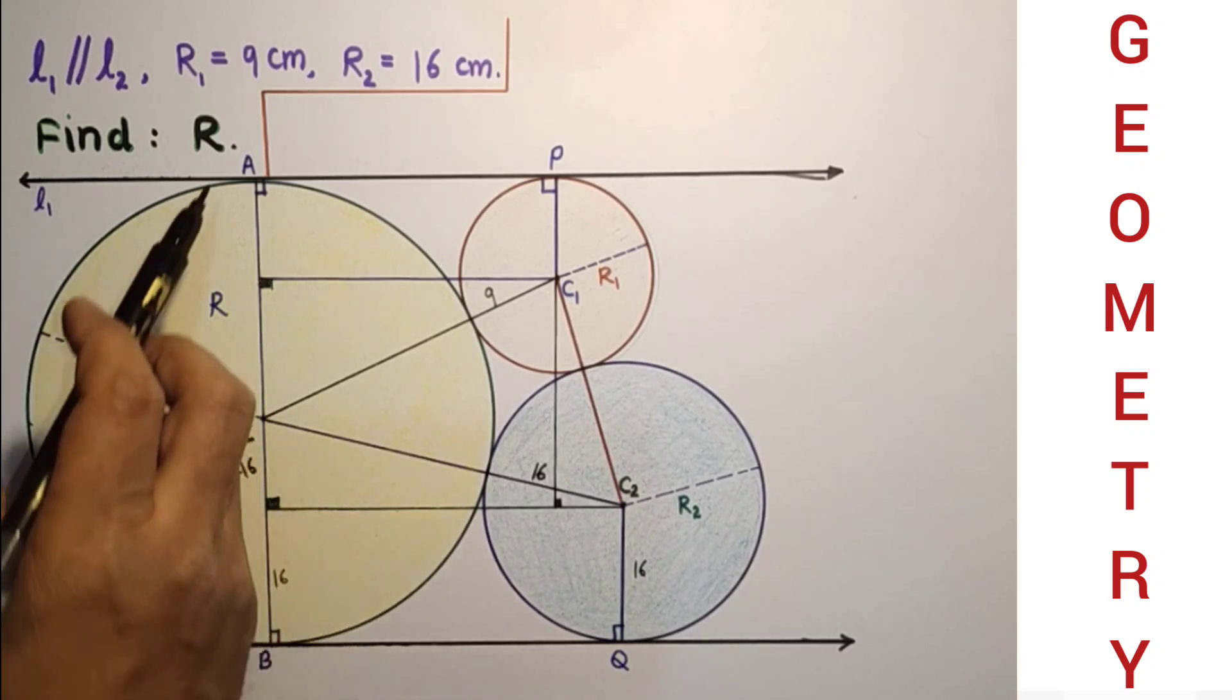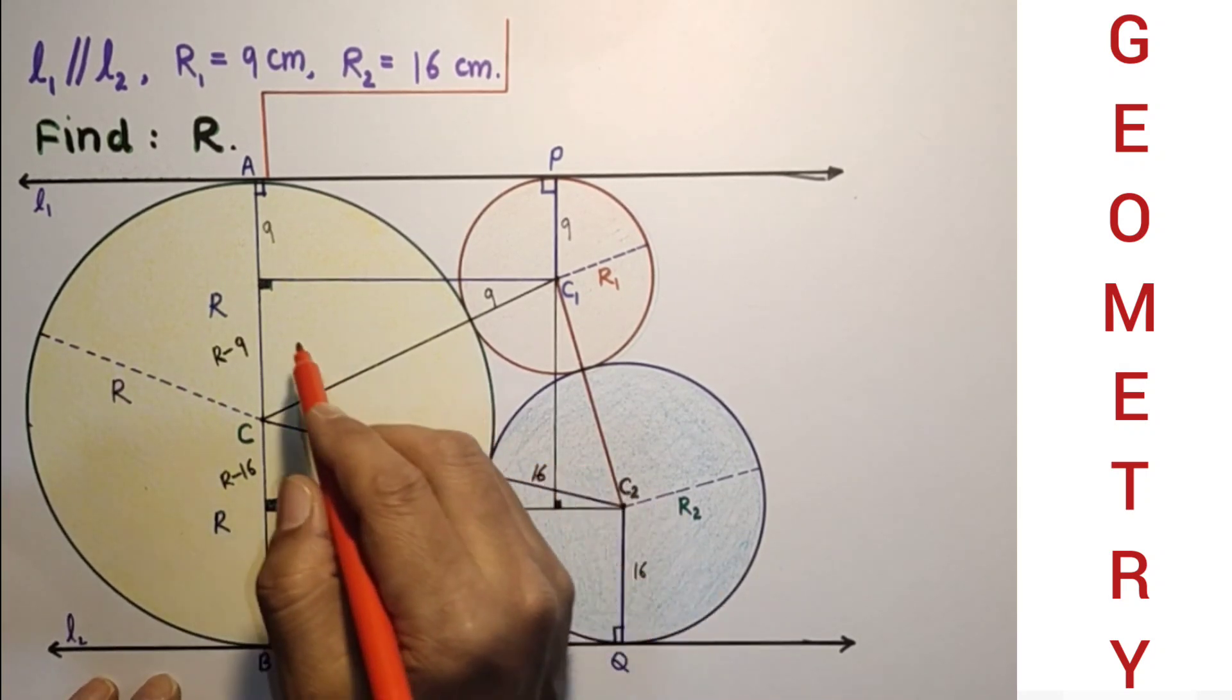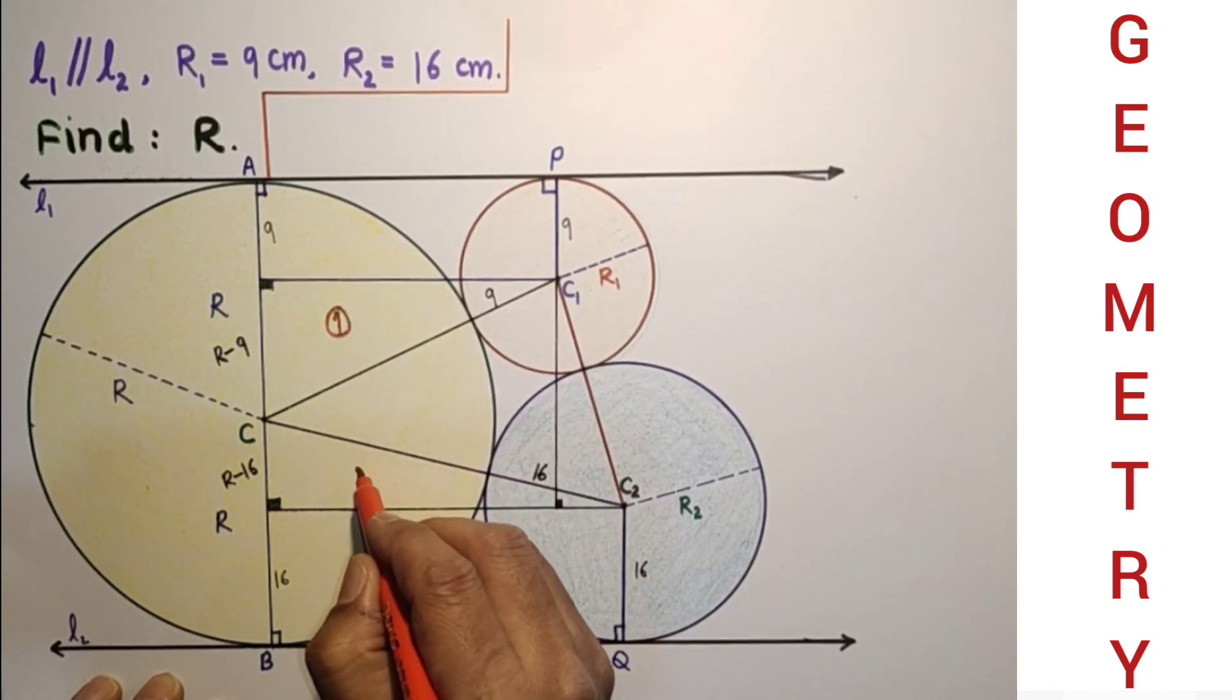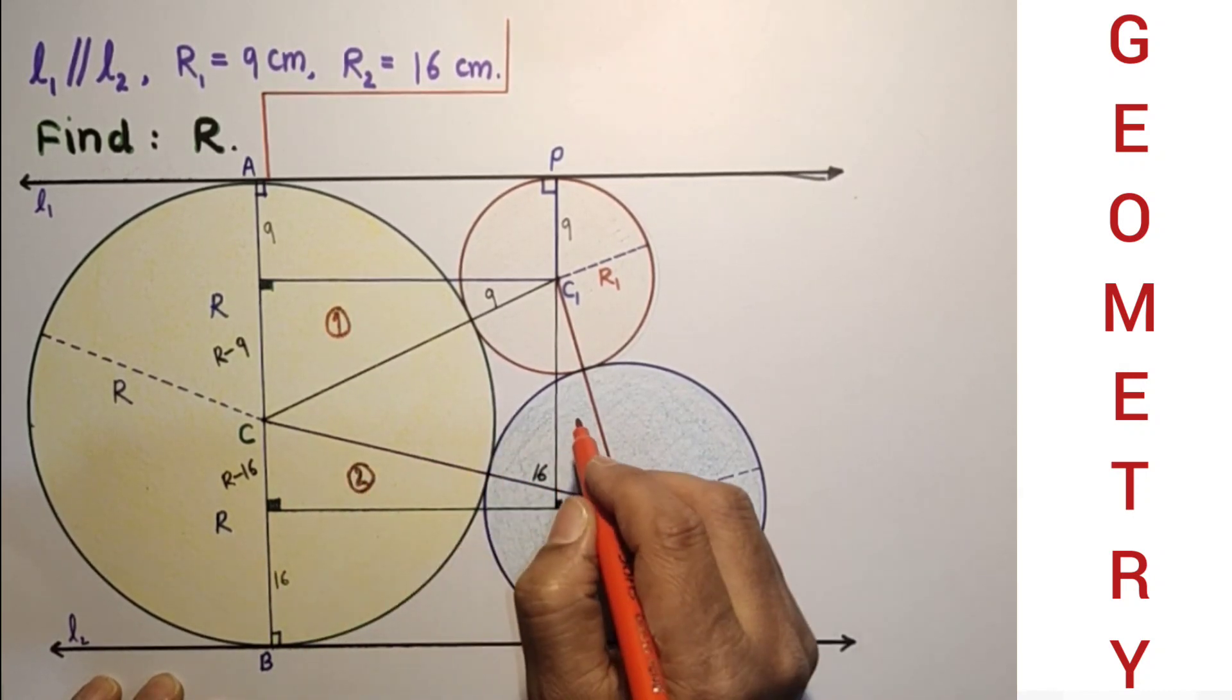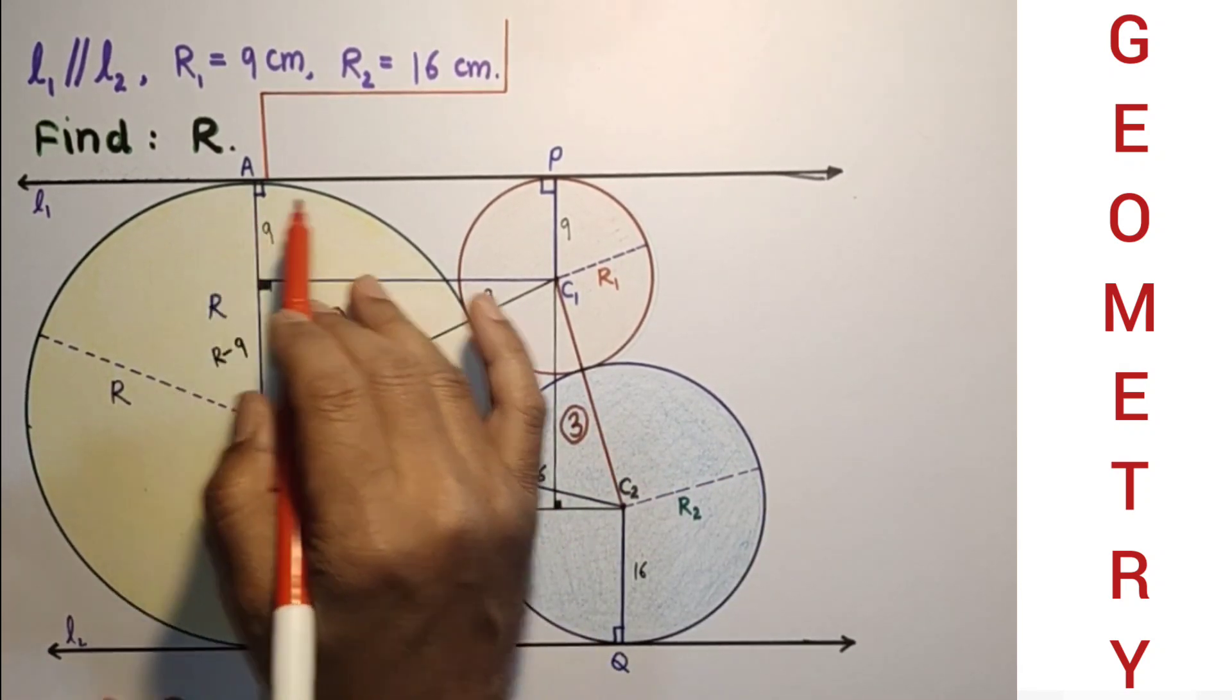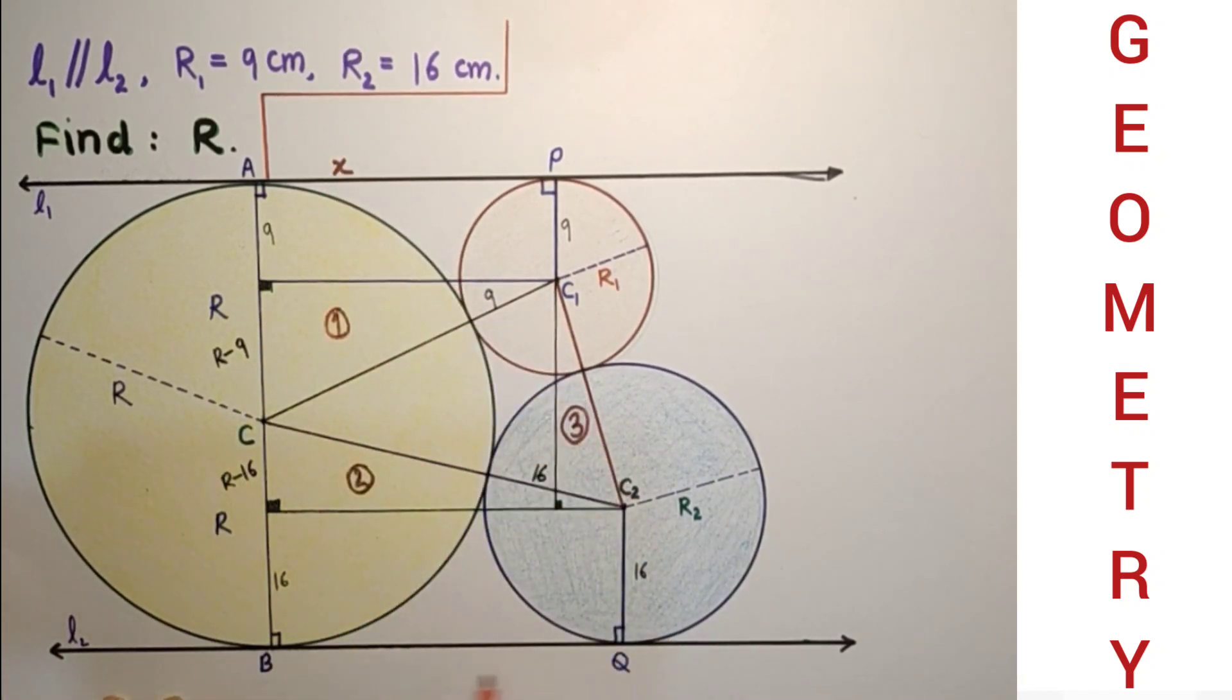Whole thing is R. This is 9, so this is R-9. We have 3 right angle triangles: Triangle 1, Triangle 2, and this triangle 3. Let this common tangent AP be X. And let this common tangent BQ be Y, which is to be found.